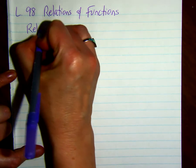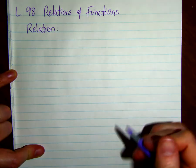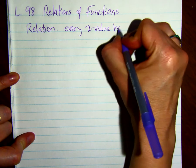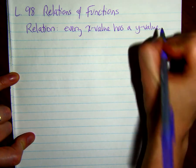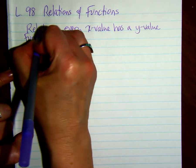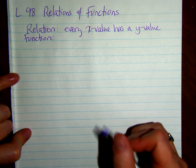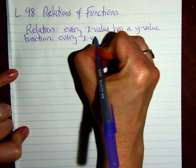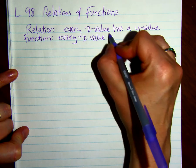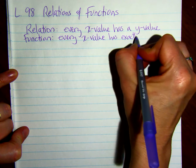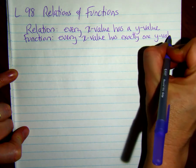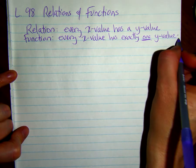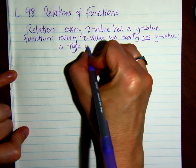So in a relation, every x value has a y value. For a function, every x value has exactly one y value. And a function is a type of relation.